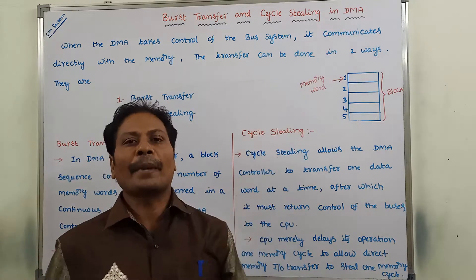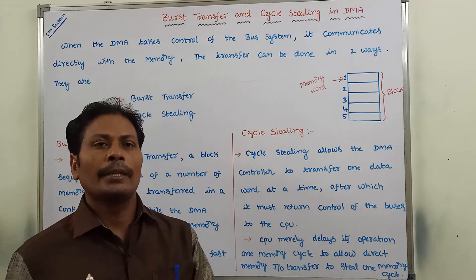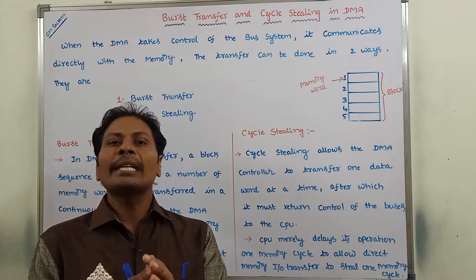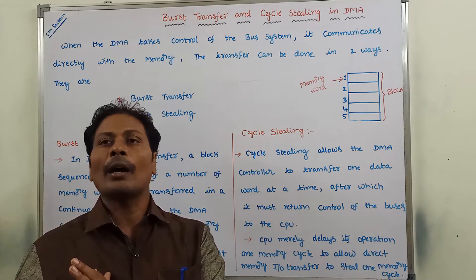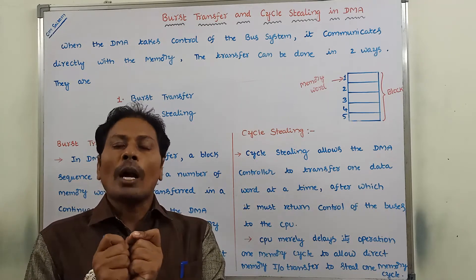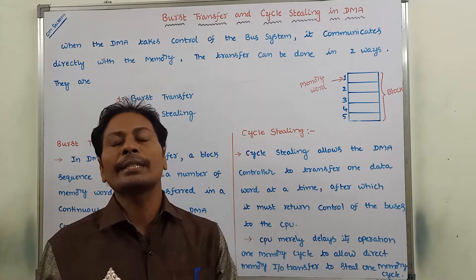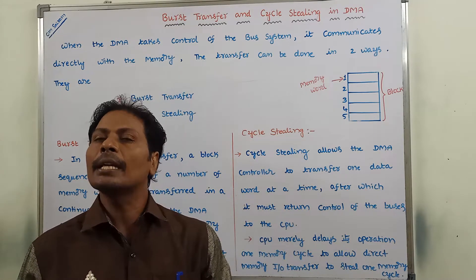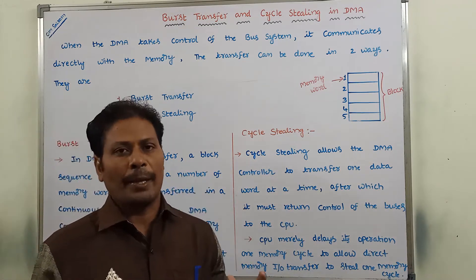First of all, what is DMA? DMA stands for Direct Memory Access. What is the purpose of DMA? Without involvement of the CPU, an IO device wants to transfer some data to the main memory. That means it can be handled by the DMA controller. That is the purpose of DMA.